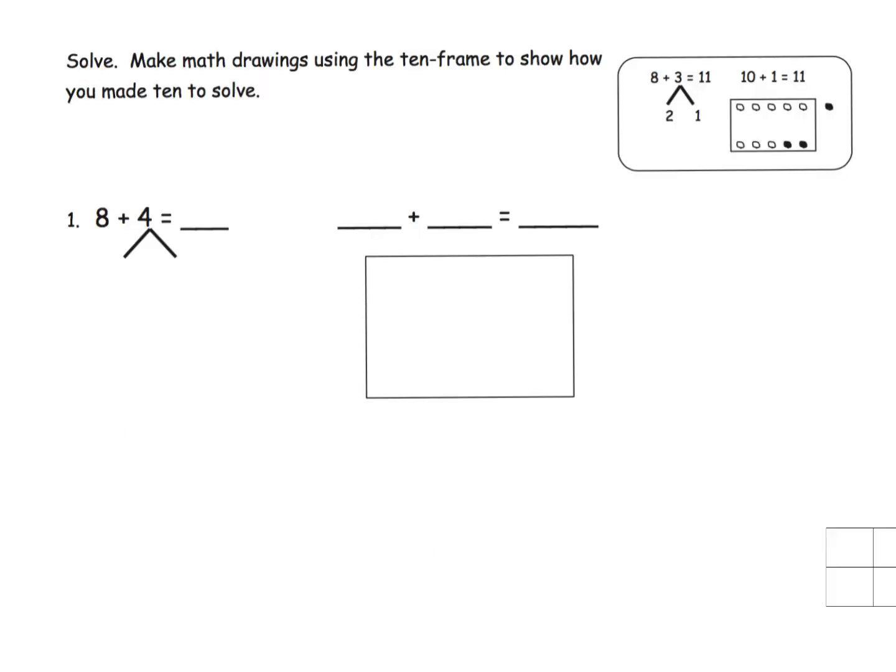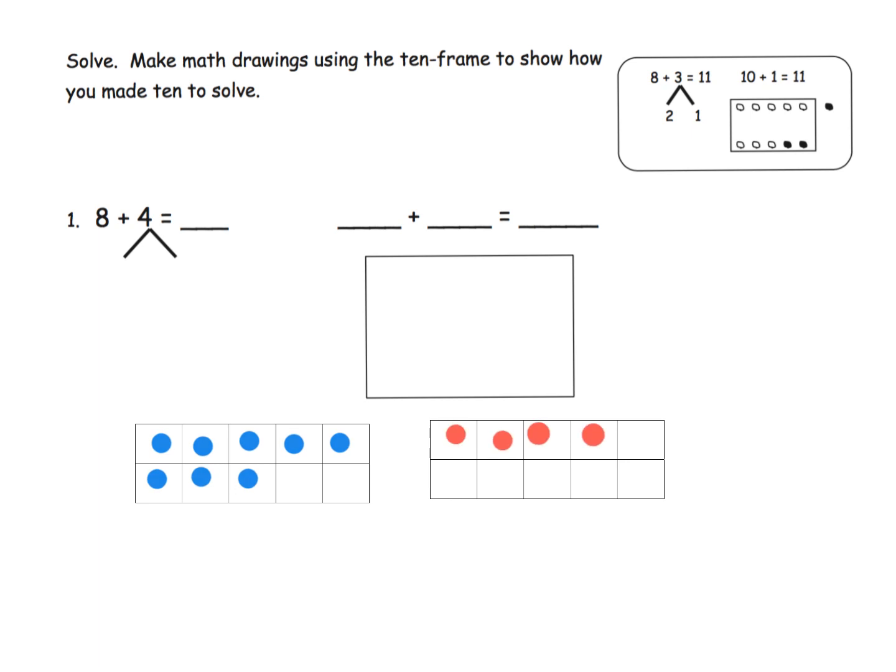We're being asked to solve and make math drawings using the 10 frame to show how you made a 10 in order to solve. I'm going to explicitly use actual 10 frames. We're going to begin by modeling 8 plus 4. We're going to start by modeling 8: 1, 2, 3, 4, 5, 6, 7, 8. Now we're going to model the 4: 1, 2, 3, 4. We've just modeled the 8 plus 4. We're going to show students that what we're missing down here is 2 dots, so we're going to take two dots and move them over here. We're going to think of that 4, instead of thinking of it as a 4, we're going to think of it as 2.